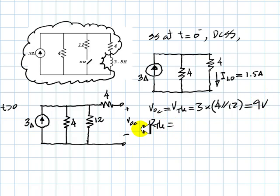And R Thevenin, we can obtain from the kill the sources method. We kill the source and the equivalent resistance is this resistor in series with the parallel of those two. 4 in series with 3. That is 7 ohms.